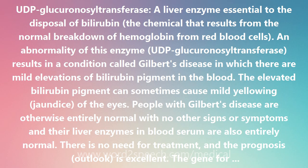There is no need for treatment, and the prognosis is excellent. The gene for UDP-glucuronosyltransferase has been mapped on a non-sex chromosome. A single dose of the Gilbert version of the gene is enough to produce Gilbert's disease. The condition is said therefore to be an autosomal dominant trait.